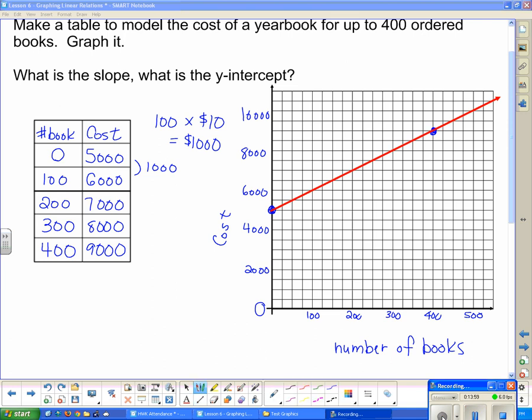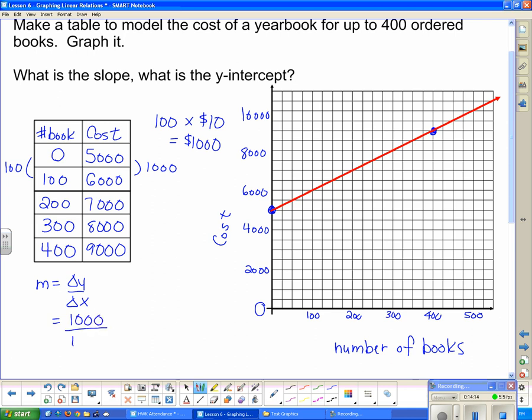Now this asks, what's the slope, and what's the y-intercept? Well, if I take a look at the table, I can get the slope pretty easily. The slope equals the change in y over the change in x, which is 1,000 over 100, or 10. So there's our slope. And I could have got that off the graph too, but I chose to do it off the table. Both of them are the same thing. And what is the y-intercept? Well, the y-intercept is right here at $5,000.